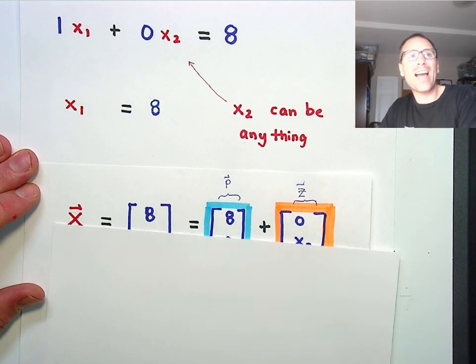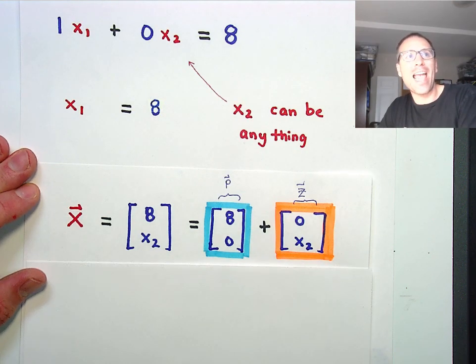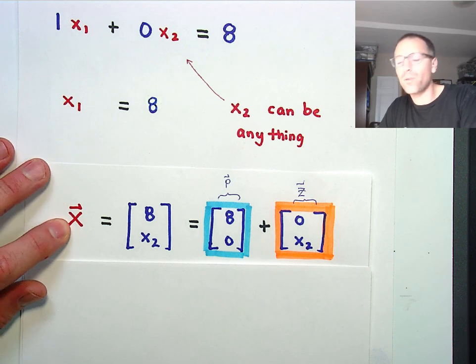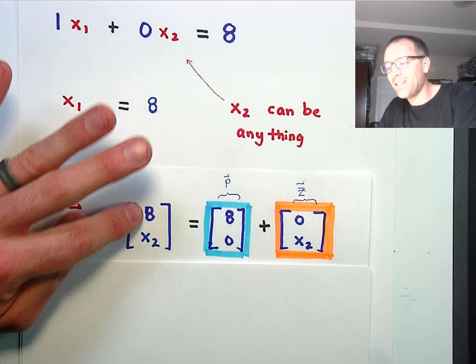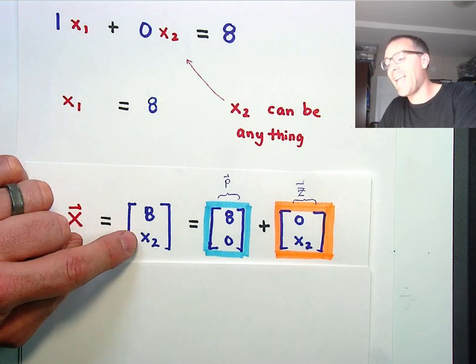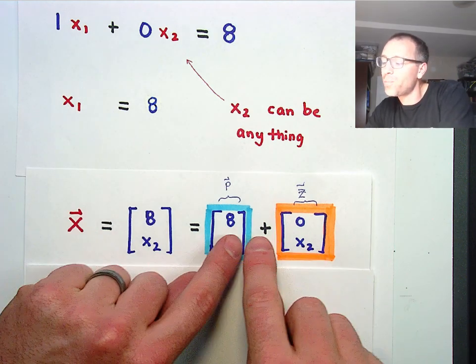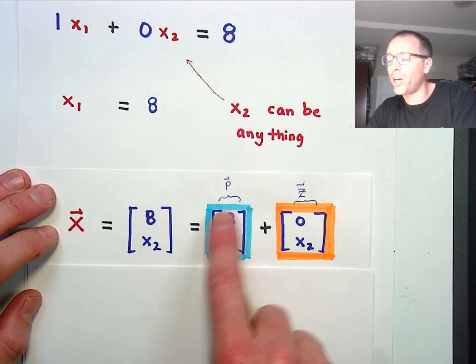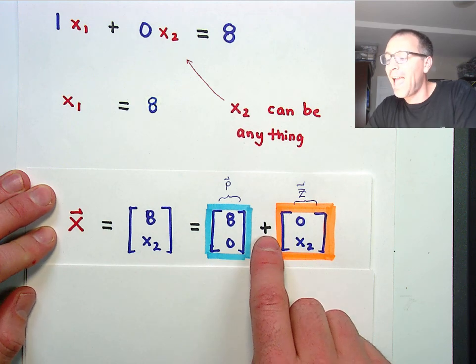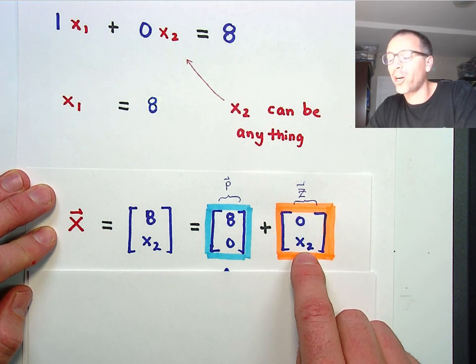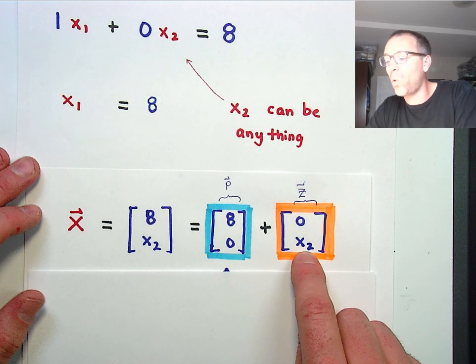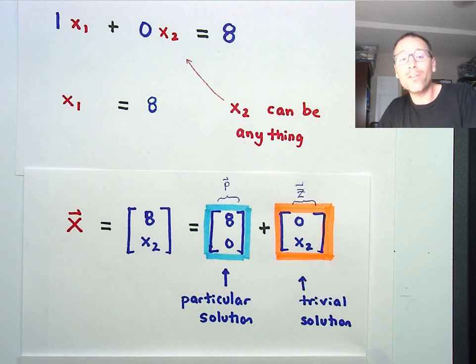Which means we kind of have this understanding that any solution to this linear systems problem would look like 8 in the first entry and any x2 in the second entry. But we can now split those into two and say, hey, 8 comma 0, we're going to call that our particular solution. And 0 comma x2, we're going to call that the thing that gets sent to 0 under our map, aka the trivial solution.